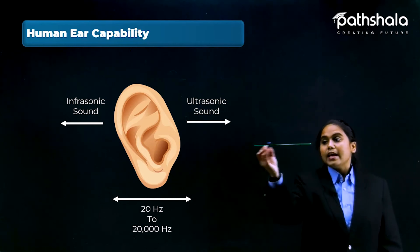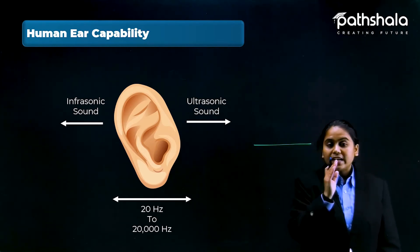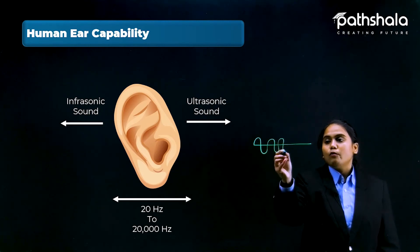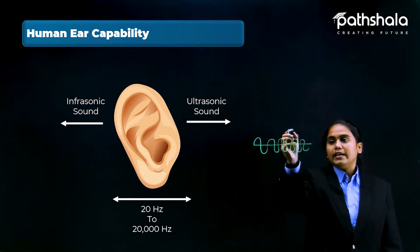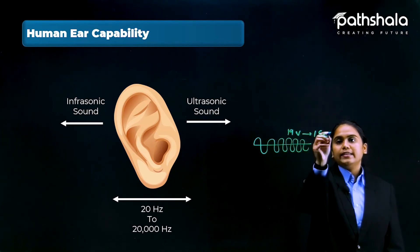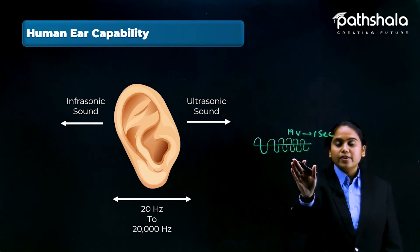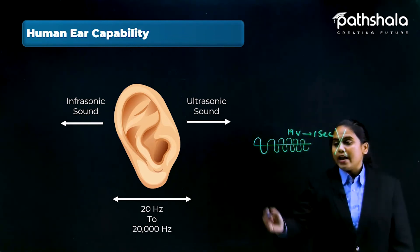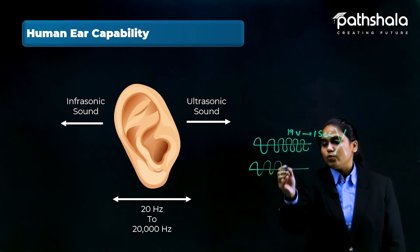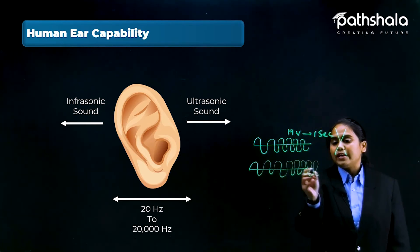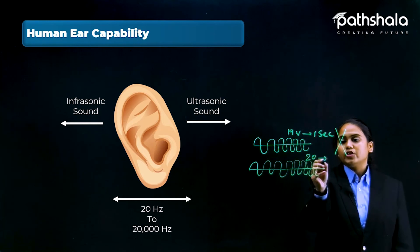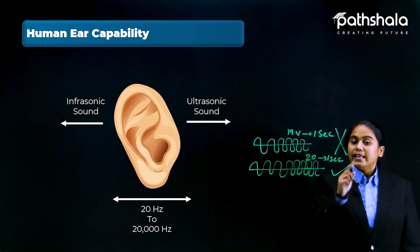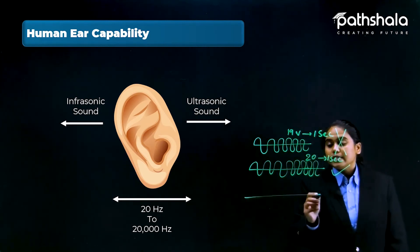For example, if the sound produced by any object has 19 vibrations in one second, then this kind of sound cannot be heard by us. But if that object is producing 20 vibrations in one second, yes, now we can hear this sound.